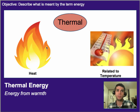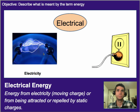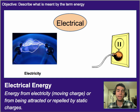Thermal energy, sometimes called heat, is the idea of energy from warmth. It's related to temperature, although not always directly linked to it, and we'll talk about that more later. Electrical energy is energy from electricity, which is moving charges, or it can be energy stored between charges that are repelling or attracting each other.